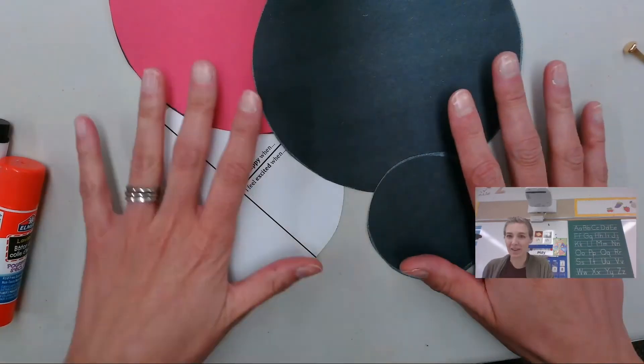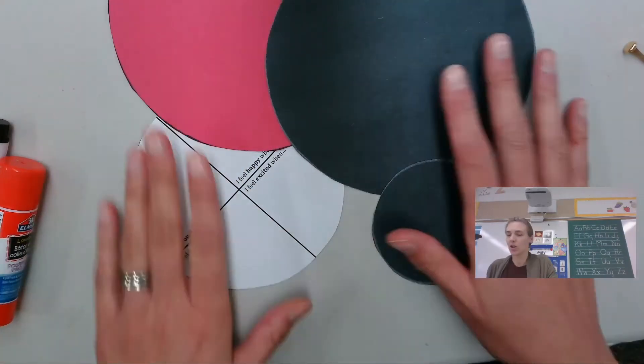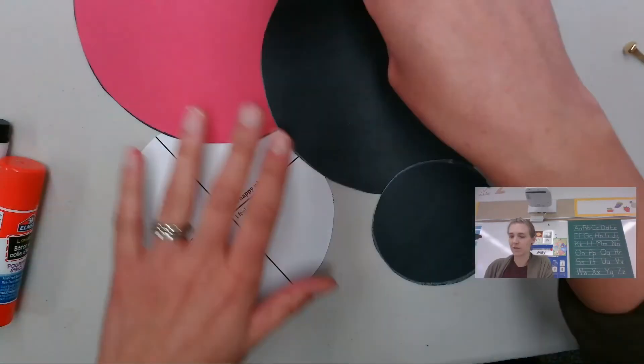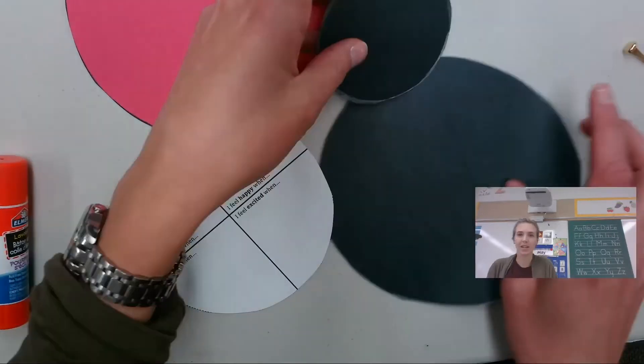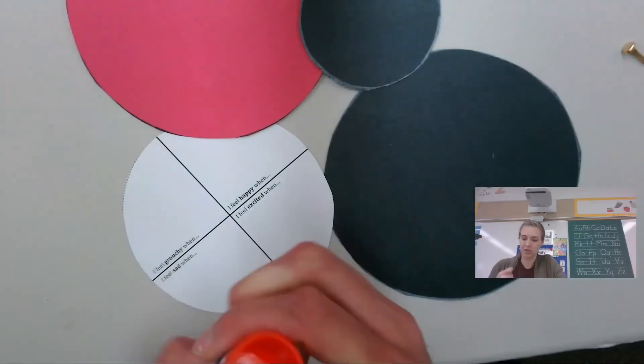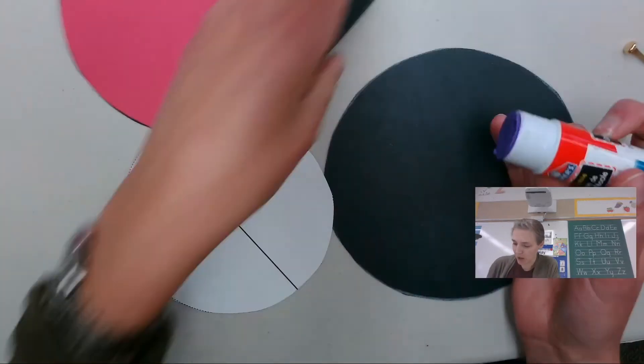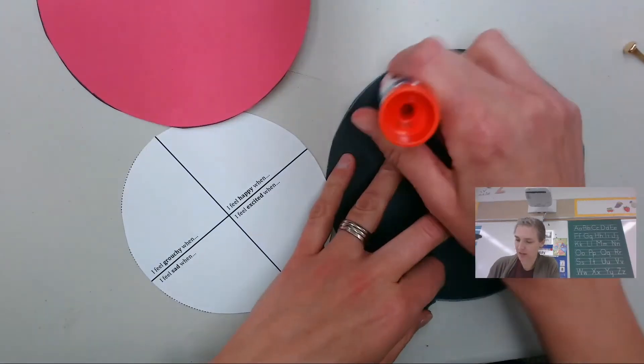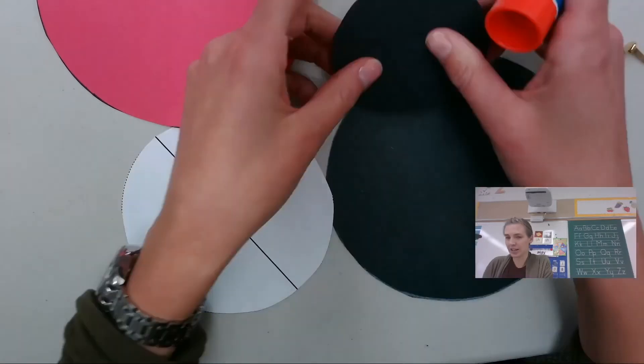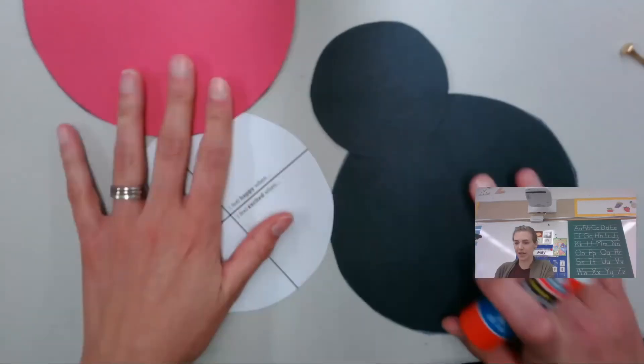All right, now that you have it all cut out, we're going to start making our ladybug. So the first thing you're going to do is you're going to glue the head on. So you take the little circle, put a little bit of glue at the top of the big circle, and then you're going to stick the small circle on top for the head.